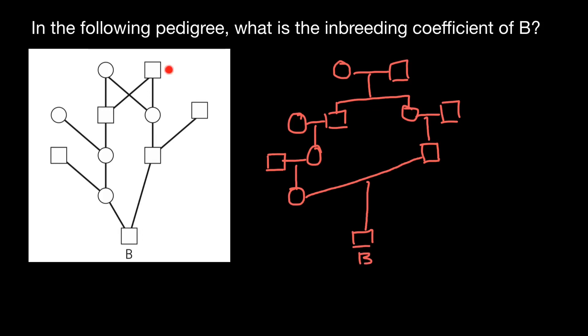On the left and on the right, this is the same pedigree, just a different representation. So what is the inbreeding coefficient? This is the probability that person B would have, at any given locus, two identical alleles inherited from the same ancestor — two alleles that are identical by descent. As you can see, we have two loops here.